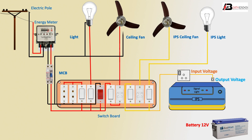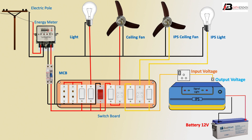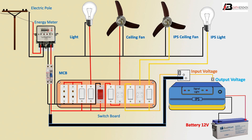Neutral connects to ceiling fan and IPS ceiling fan. Neutral connects to IPS ceiling fan and IPS light connection. Battery positive connects to IPS connection and battery negative connects to IPS. The input to IPS — phase and neutral condition — circuit is fully complete, covering both electric line and IPS line condition.